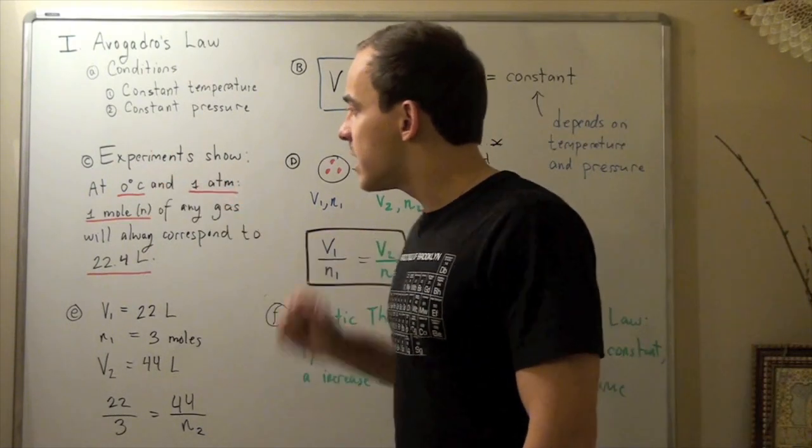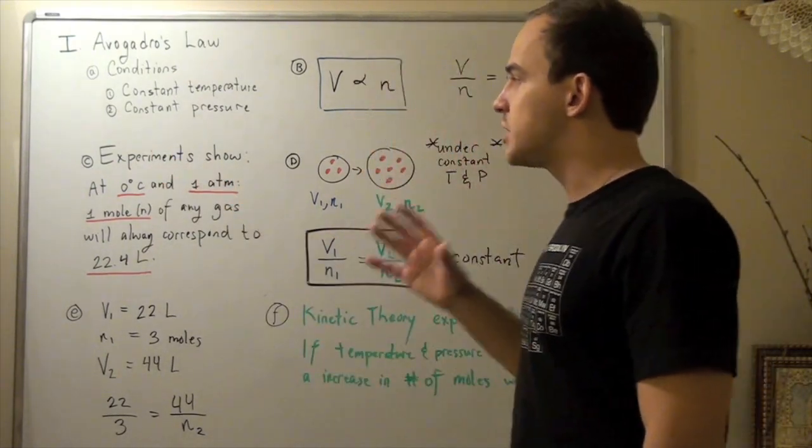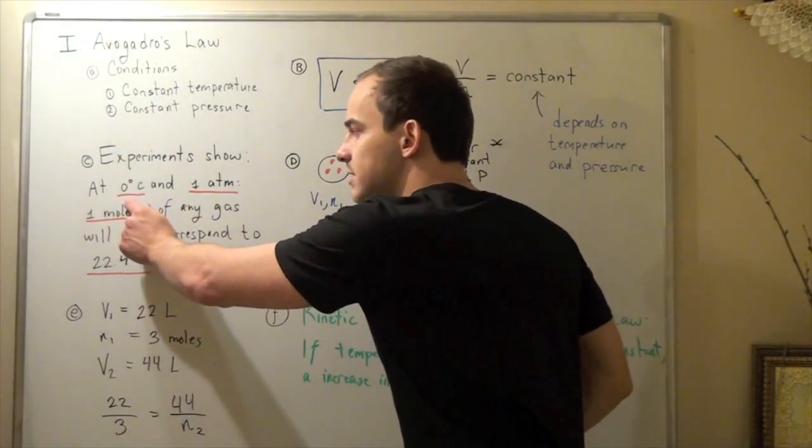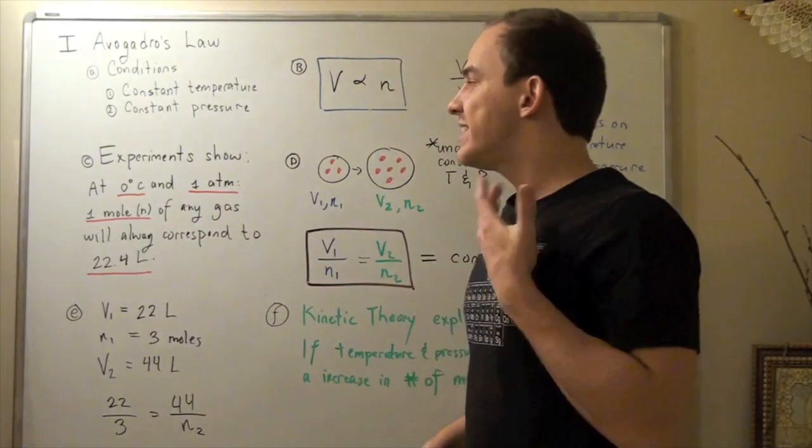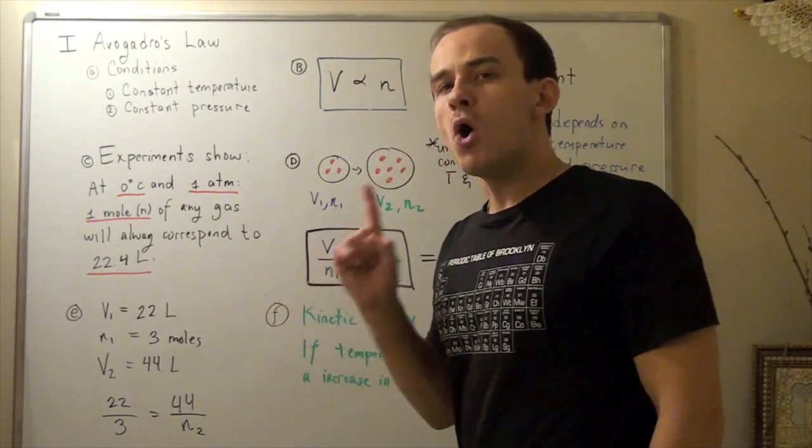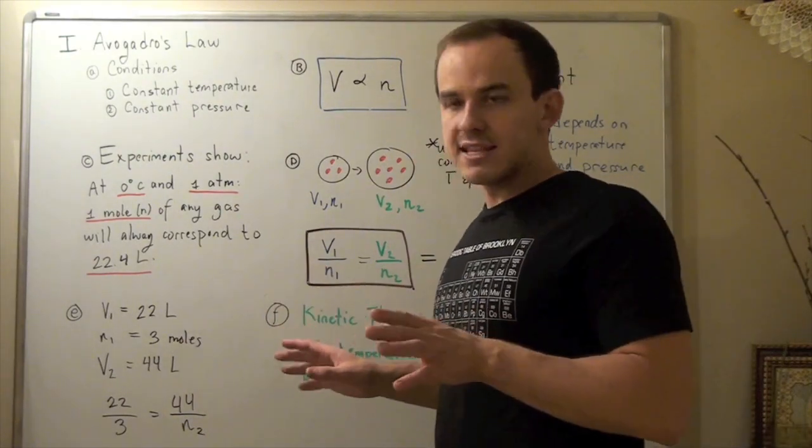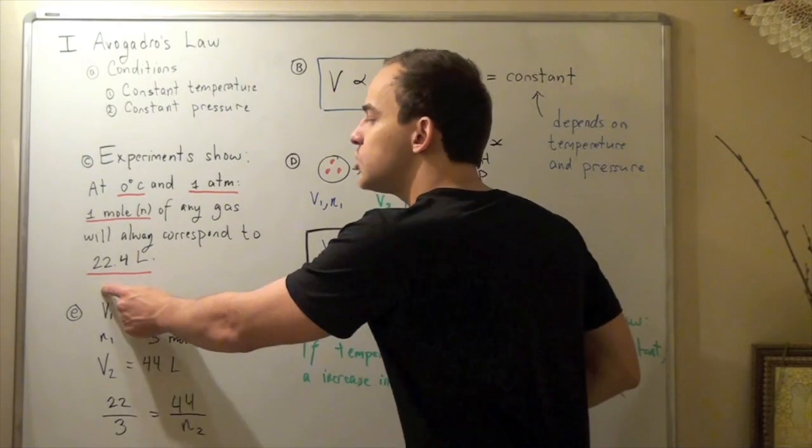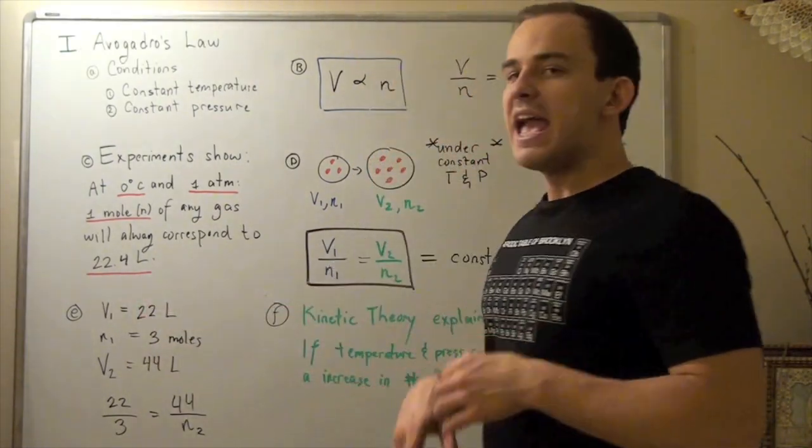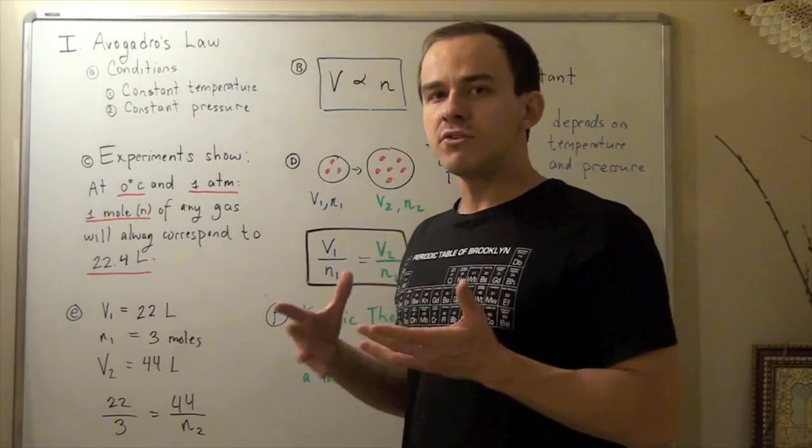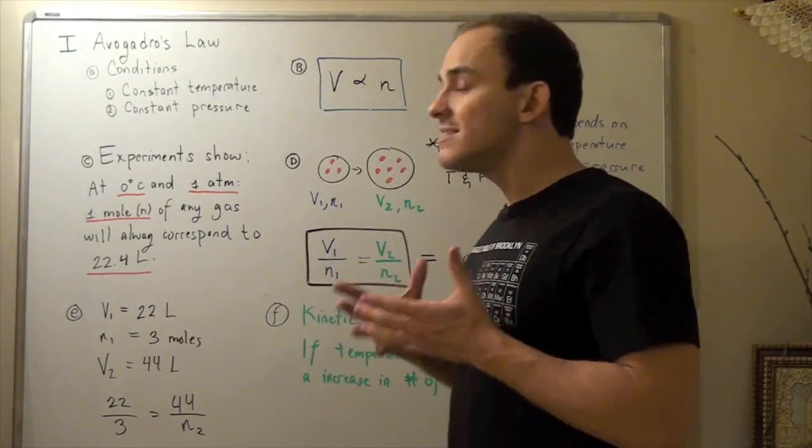Let's look at C for a second. It's important to mention that experimental results show that at zero degrees Celsius, or 273 Kelvin, and one atmospheric pressure, one mole of any gas, any gas whatsoever, will always correspond to 22.4 liters. And that's because, according to our kinetic molecular theory, volume of gas is zero. It's assumed to be zero.